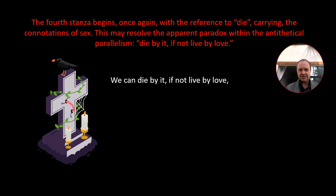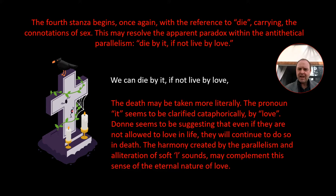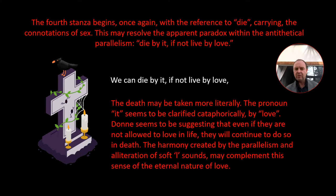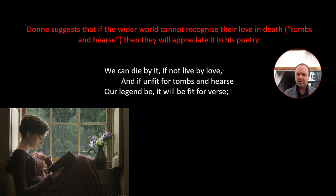The fourth stanza begins once again with the reference to 'die,' carrying the connotations of sex: 'We can die by it, if not live by love.' That could resolve the apparent paradox within the antithetical parallelism — 'die by it, live by love.' The pronoun 'it' could be clarified cataphorically by 'love.' So Donne seems to be suggesting that even if they are not allowed to love in life, they will continue to love in death. The harmony created by the parallelism and the alliteration of the soft 'l' sound could complement this sense of the eternal nature of love.